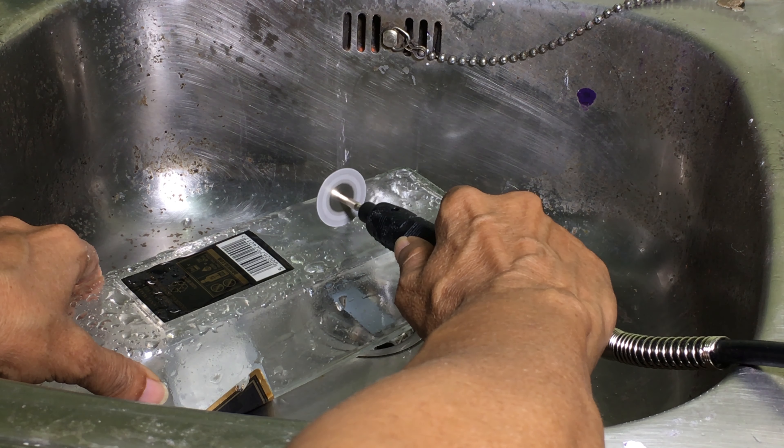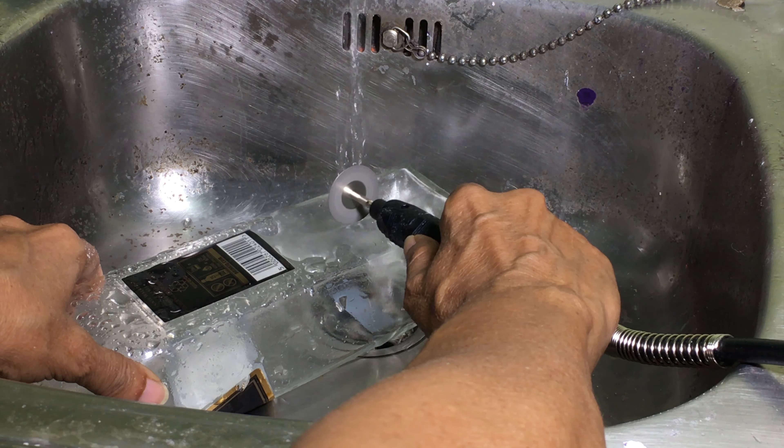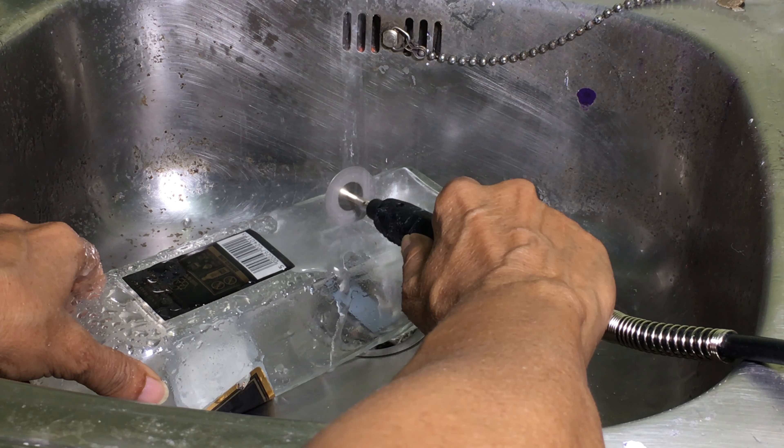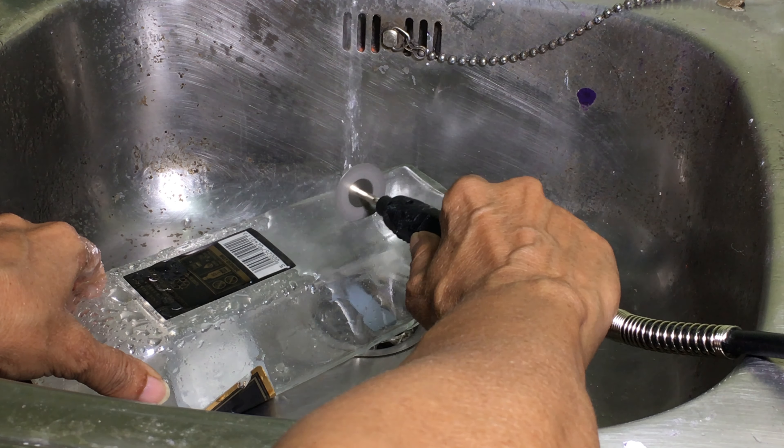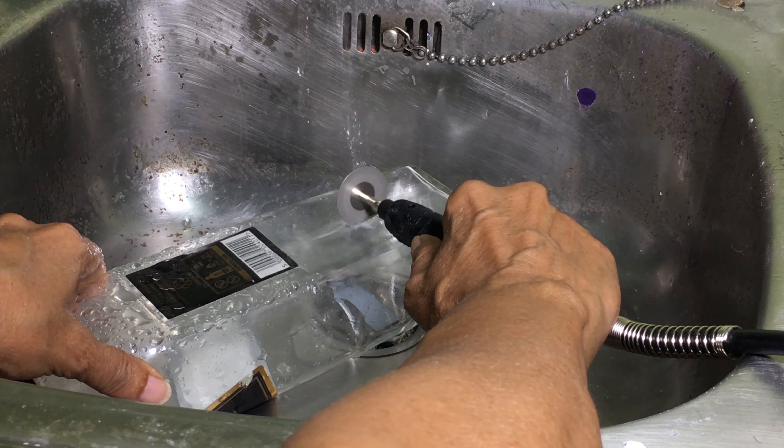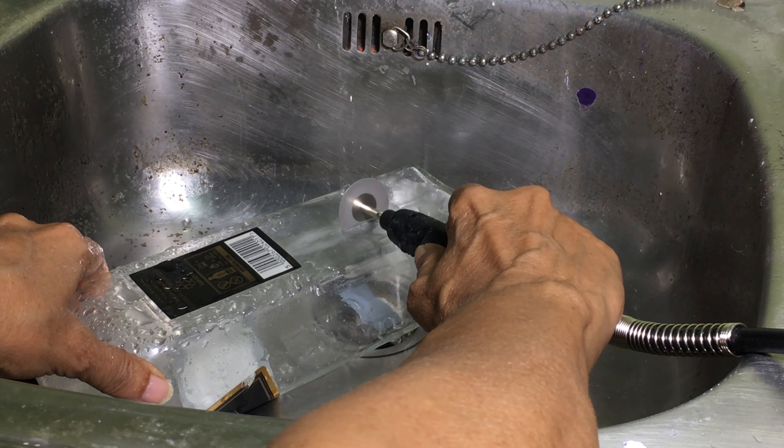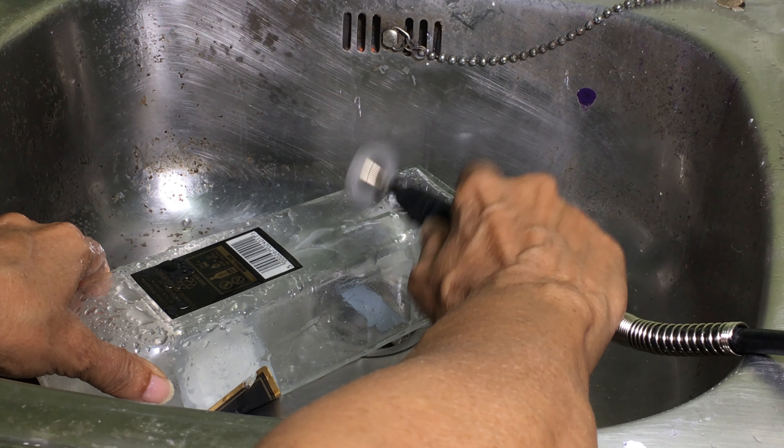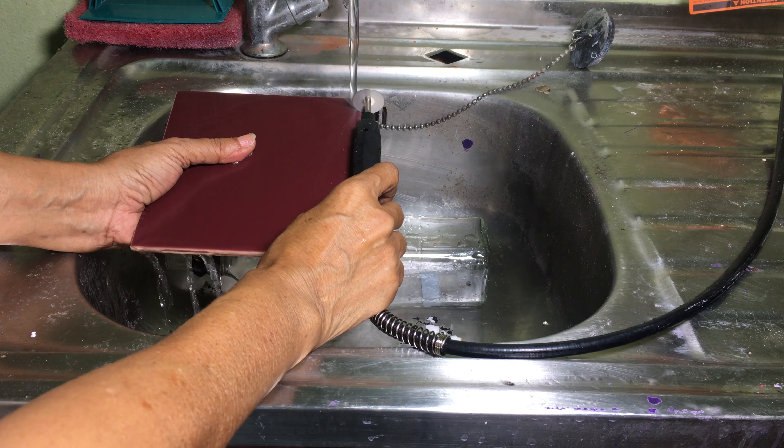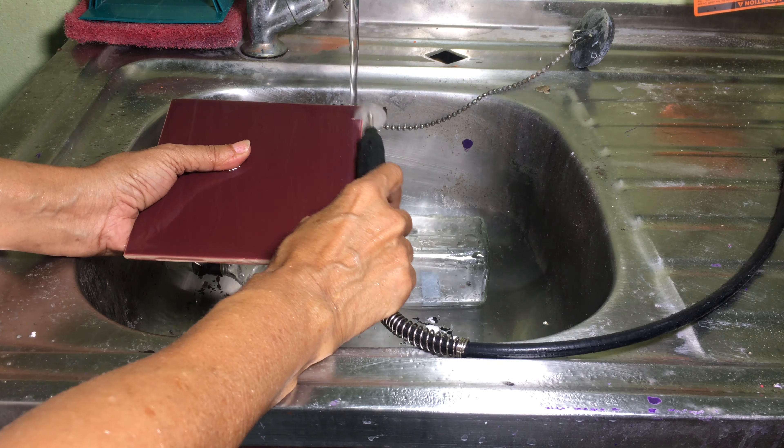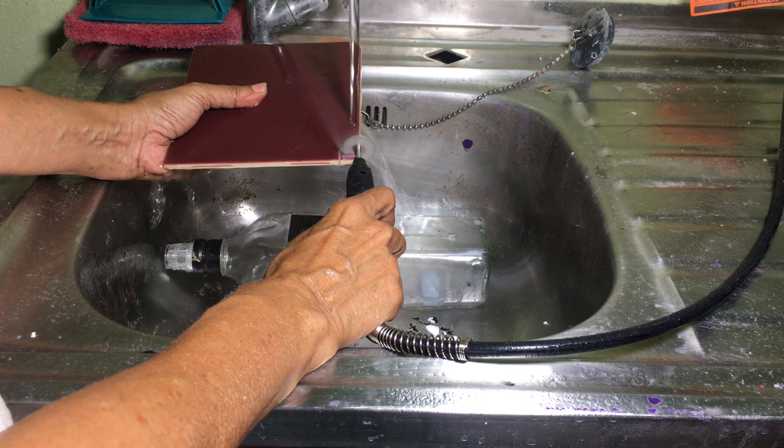There are many various type bits you can purchase that will work with the WEN rotary tool. One such bit is a diamond cutting wheel that cuts through glass and tile. Water is needed to help lubricate the wheel. I will probably have to make some sort of shield for the flex shaft to prevent the water from splashing all over.